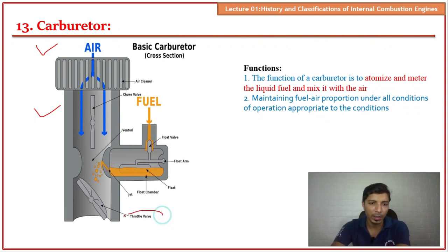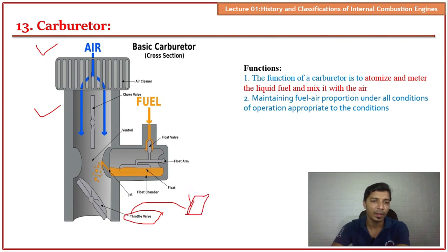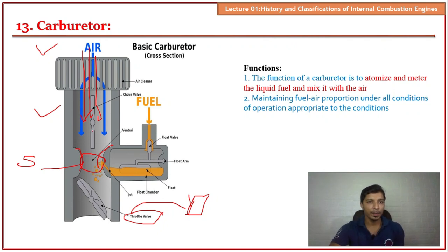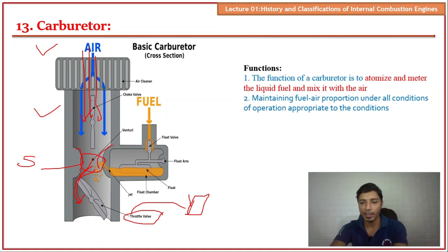The carburetor has a throttle valve attached to the accelerator pedal. When the accelerator pedal is pressed, this valve opens and allows air to come inside. As the air passes through, the cross-sectional area is reduced, creating suction in that portion. Due to this suction, fuel is sucked in and forms droplets that mix with the air. This air-fuel mixture is then supplied to the engine. The carburetor ensures a proper air-fuel ratio in petrol engines.